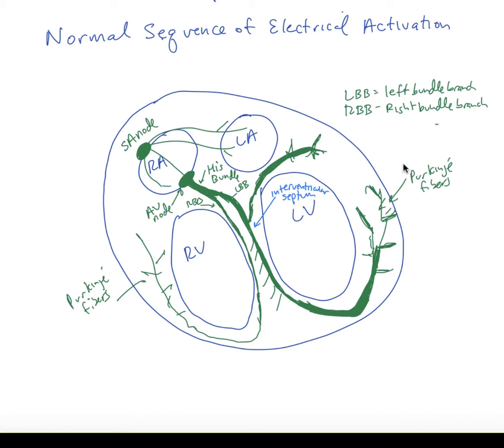After some slowing of conduction in the AV node, the signal gets to the His bundle, or bundle of His, which then divides into a thicker left bundle branch and a thinner right bundle branch that run along the interventricular septum.